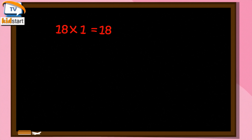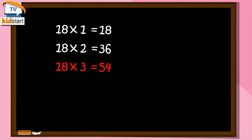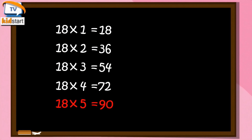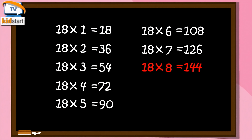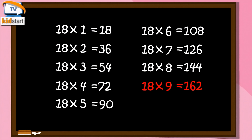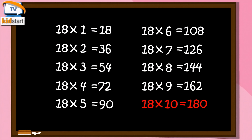Eighteen ones are eighteen. Eighteen twos are thirty-six. Eighteen threes are fifty-four. Eighteen fours are seventy-two. Eighteen fives are ninety. Eighteen sixes are one hundred eight. Eighteen sevens are one hundred twenty-six. Eighteen eights are one hundred forty-four. Eighteen nines are one hundred sixty-two. 18 tens are 180.